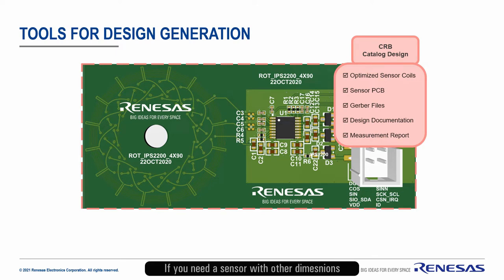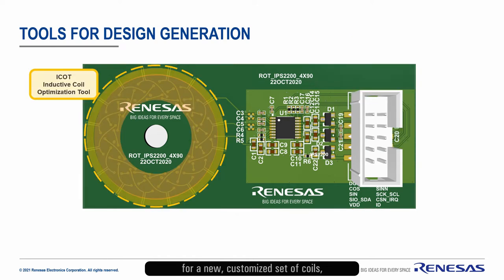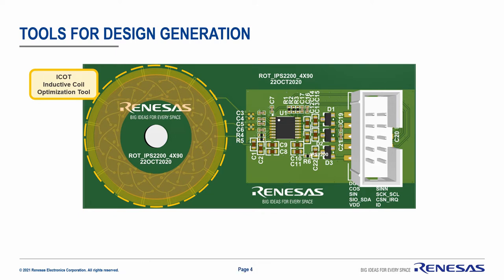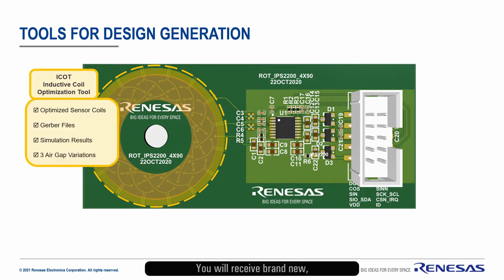If you need a sensor with other dimensions or performance, please ask your Renesas contact partner for a new customized set of coils generated by the Inductive Coil Optimization Tool, also known as ICOT. You will receive brand new optimized sensor coils as Gerber files and simulation results for three different air gaps.